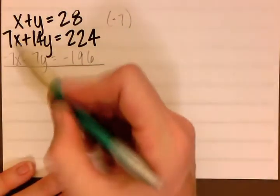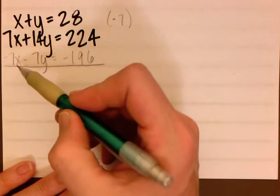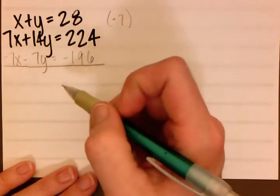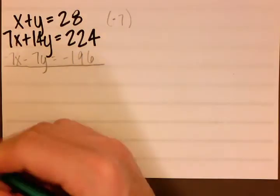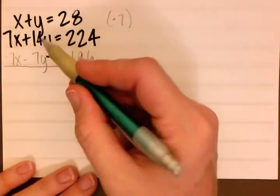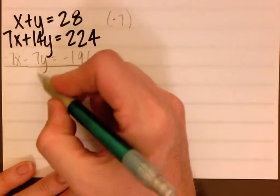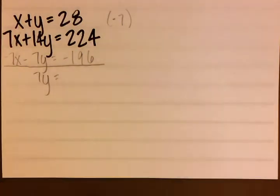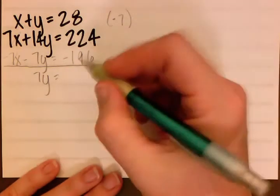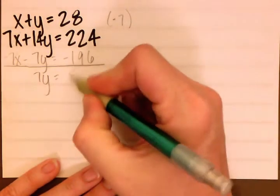Now you can see here that we're going to be able to eliminate our x variable to solve for the y variable. So 7x minus 7x leaves us with nothing. 14y minus 7y is 7y. And 224 minus 196 is 28.